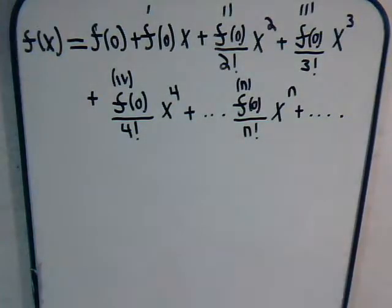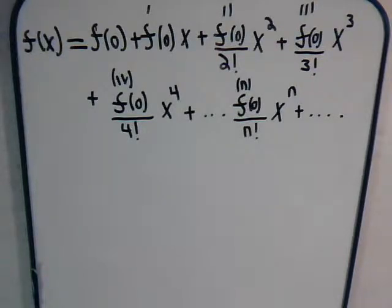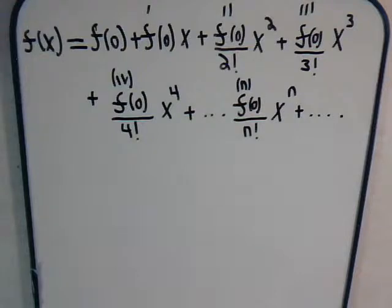We've spent the first 12 or 15 videos looking at permutations and combinations, doing different types of counting problems. Then we switched our focus to the binomial expansion theorem and now to the Taylor expansion series. This background will help us develop ordinary and exponential generating functions, which are powerful tools to solve more complicated permutation and combination problems.